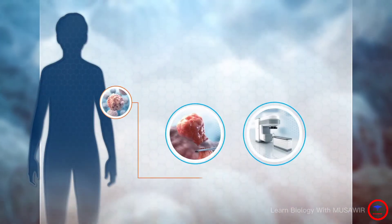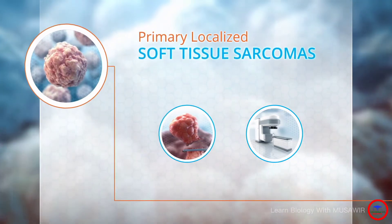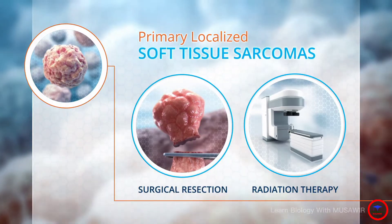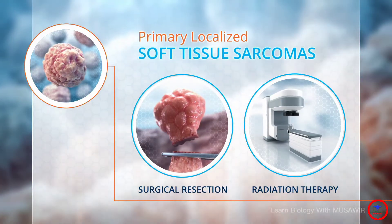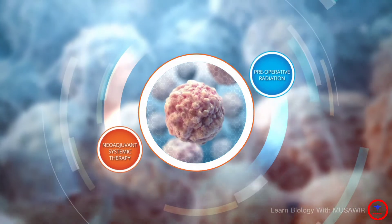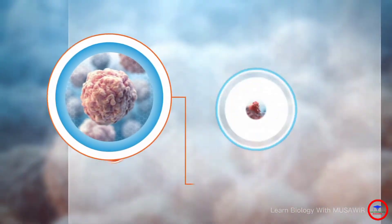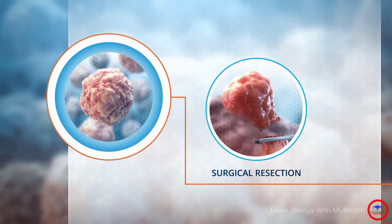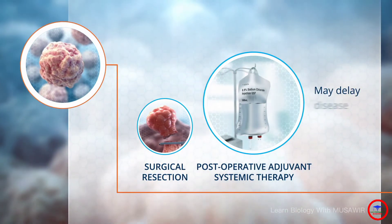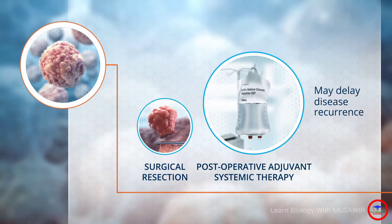The current treatment approach for primary localized soft tissue sarcomas often begins with surgical resection and may include radiation, which may help with local control. Preoperative radiation or neoadjuvant systemic therapy may be considered to help reduce tumor size and facilitate surgical resection. Postoperative adjuvant systemic therapy may delay disease recurrence but benefit to overall survival has not been demonstrated.